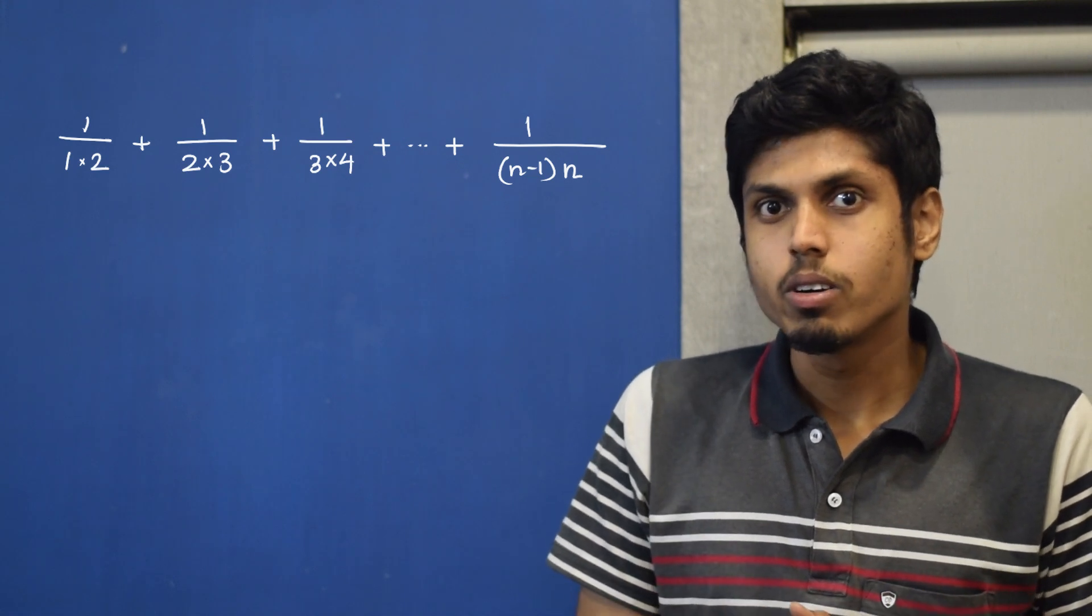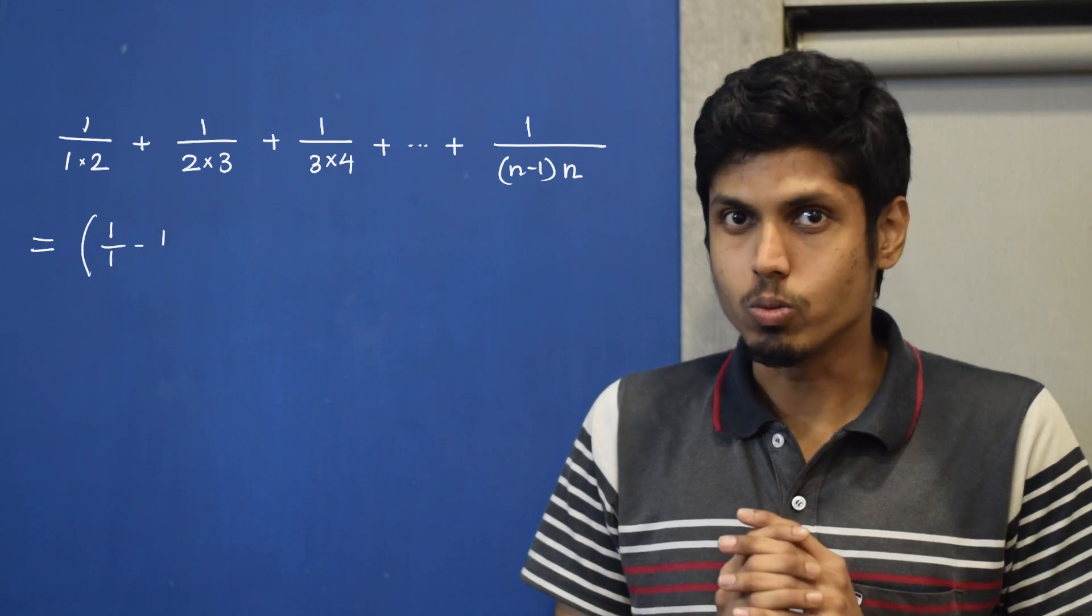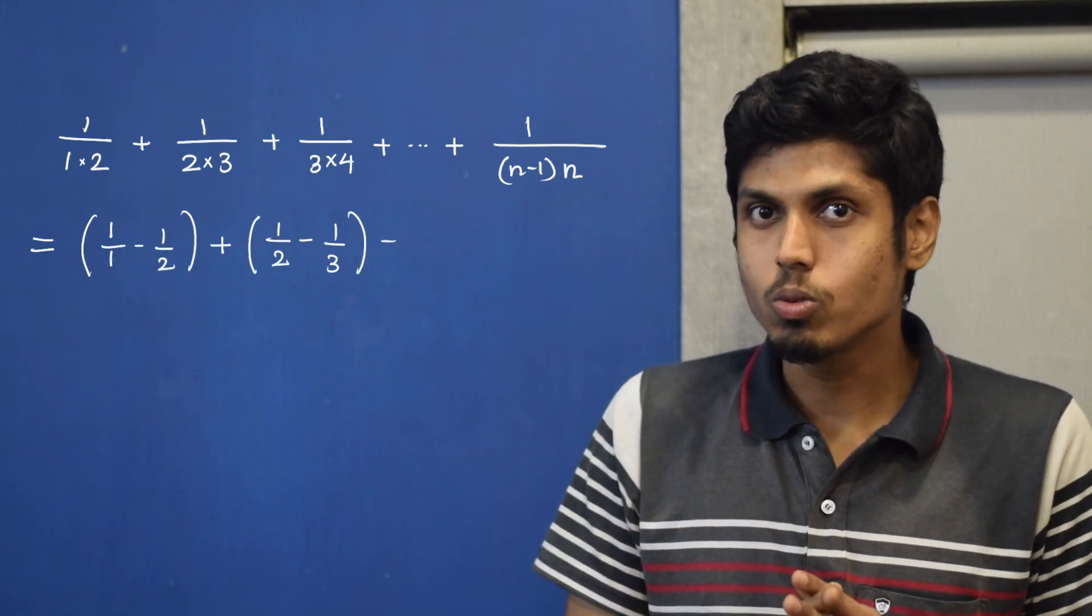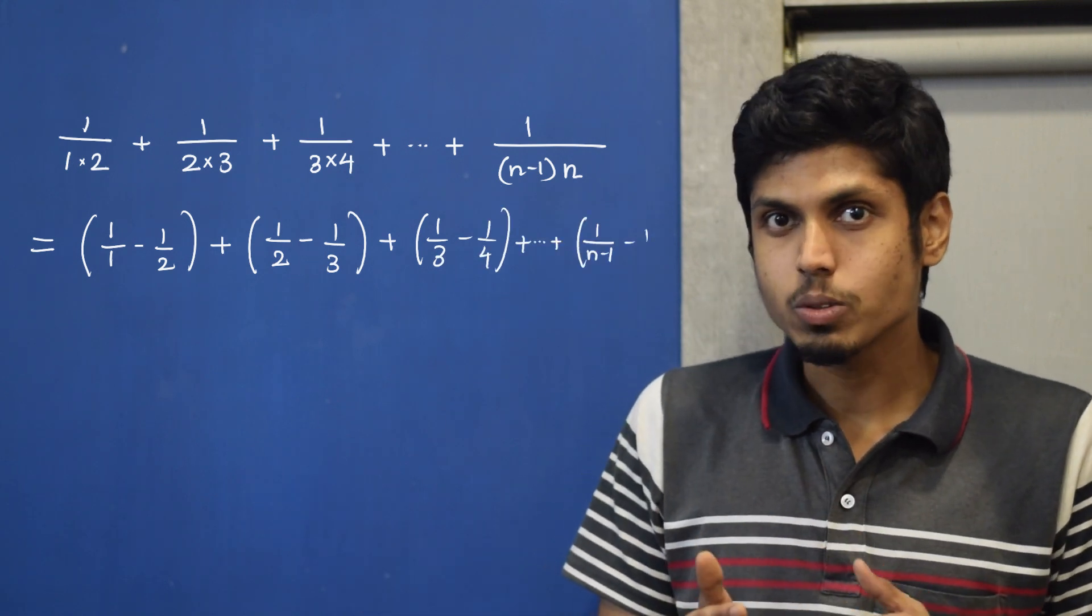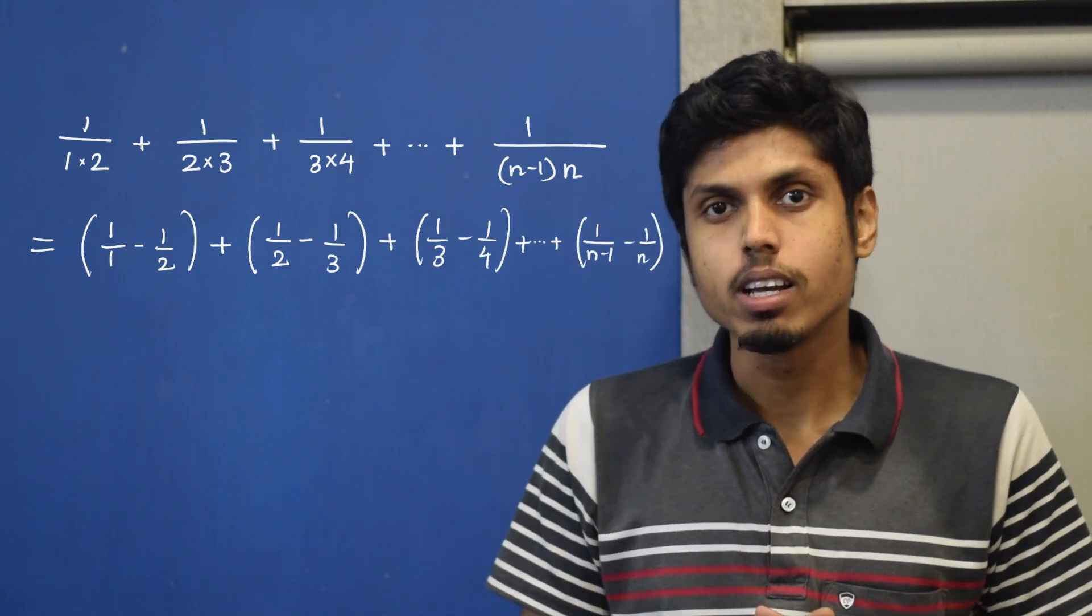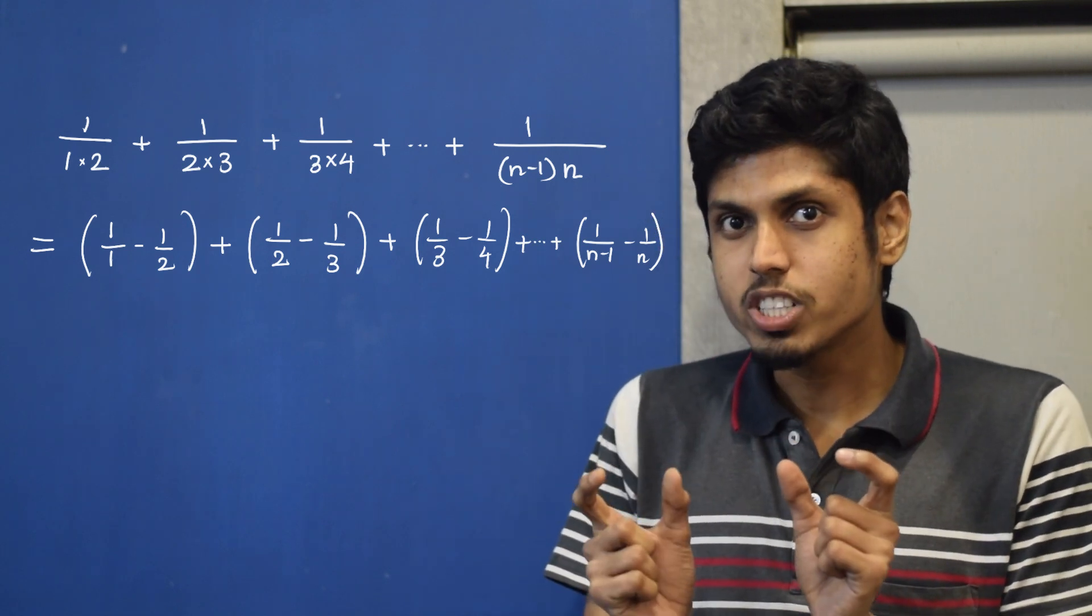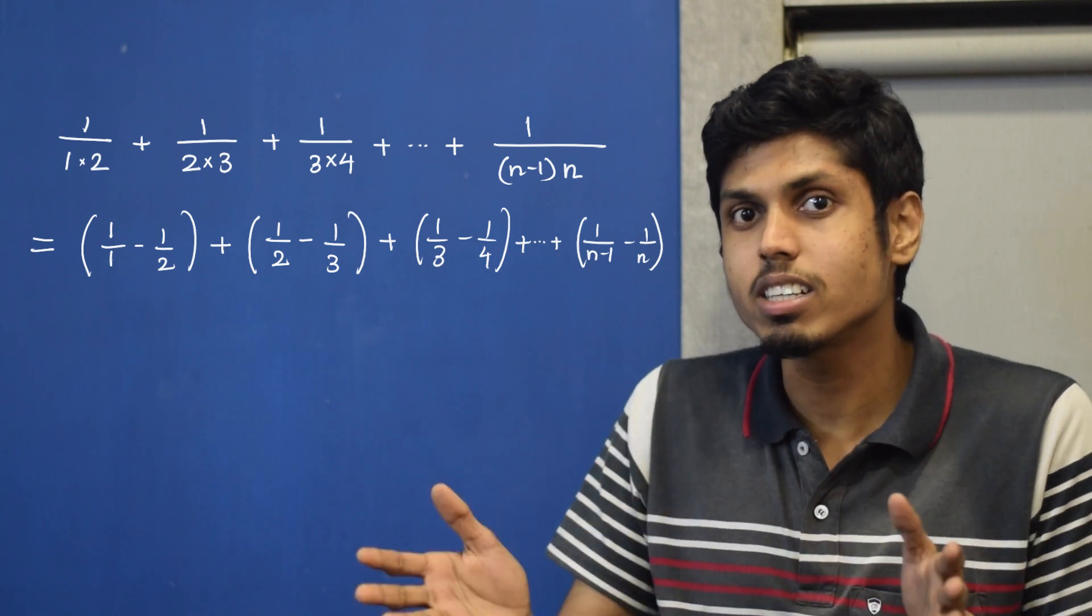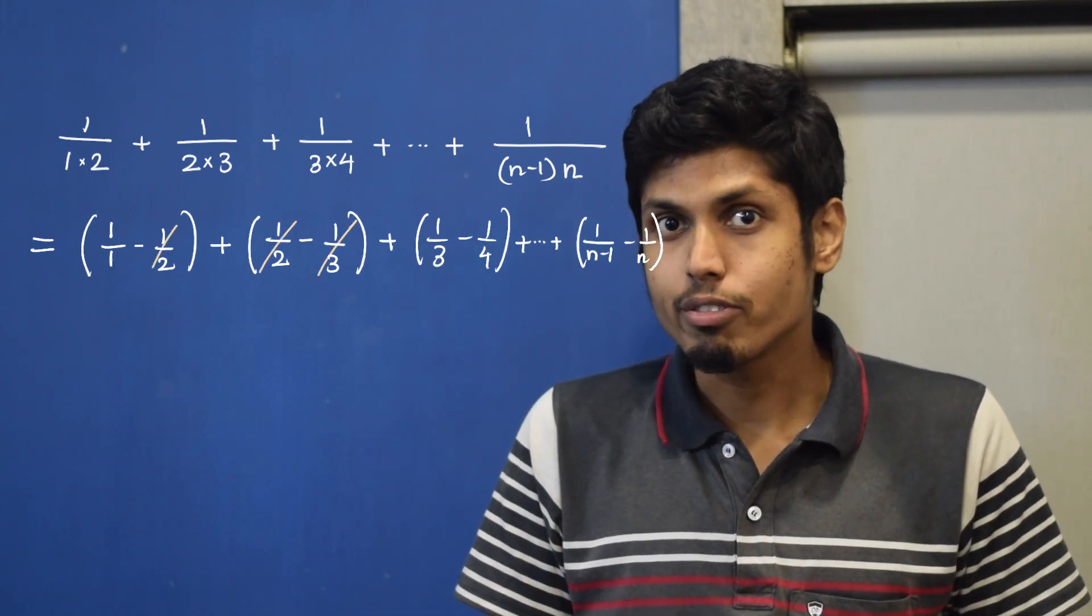This equals 1 by 1 minus 1 by 2, and the second term can be written as 1 by 2 minus 1 by 3 and so on till 1 by n minus 1 minus 1 by n. You can see that two terms which are equal in magnitude have different signs in the adjacent terms, thereby they get cancelled out nullifying to 0.